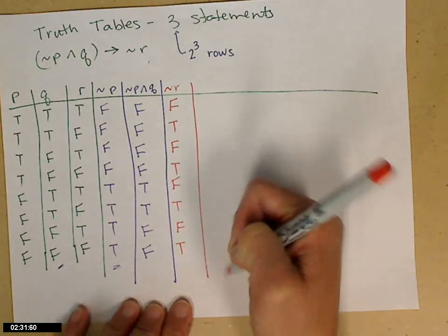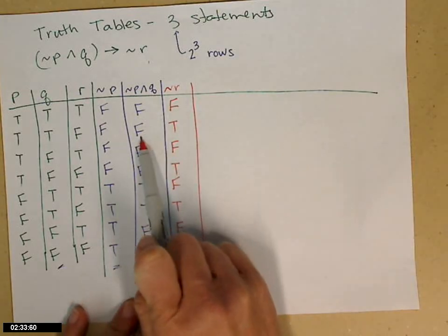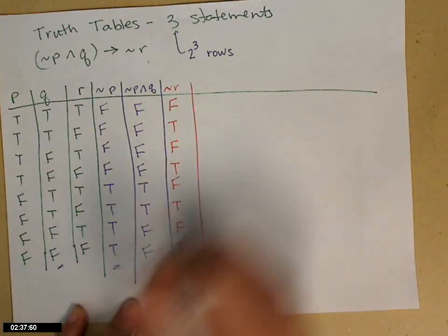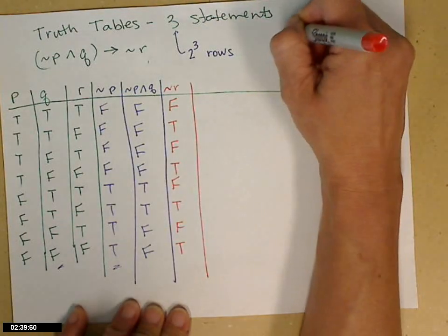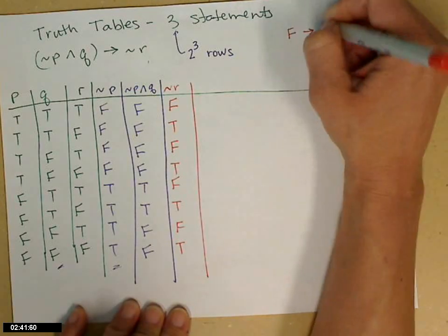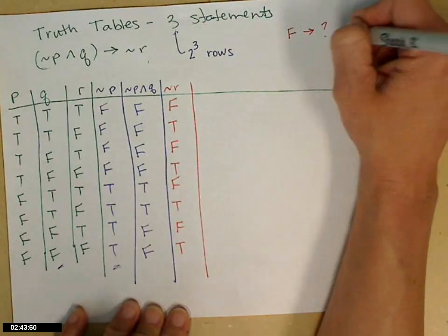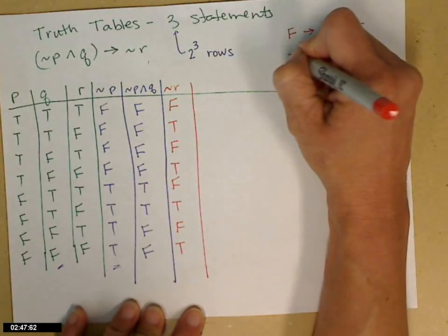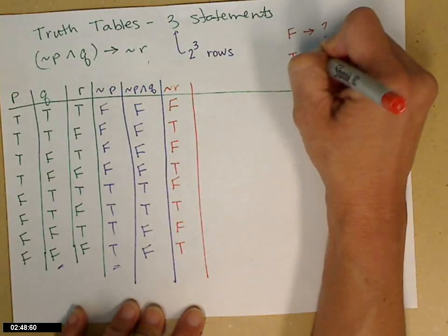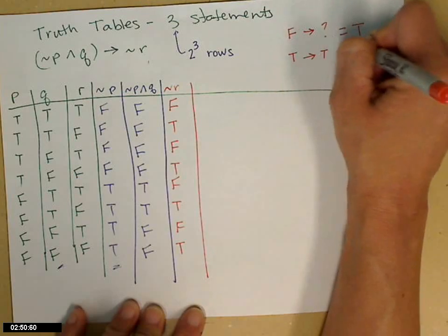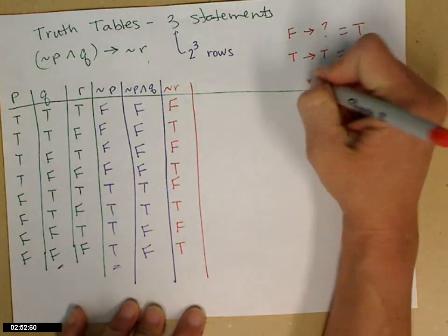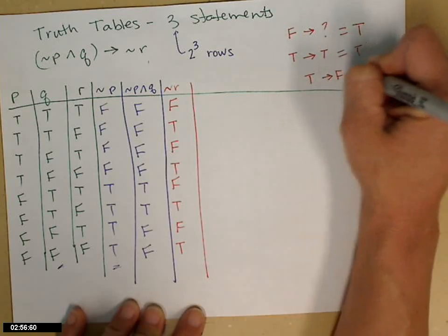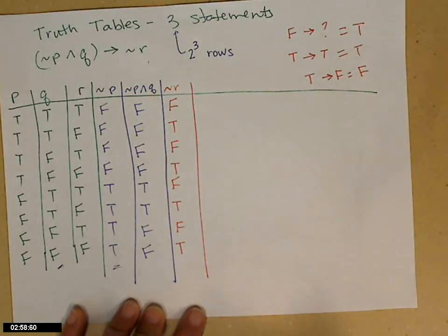Now I'm ready to do the if-then. So if the purple column, then the red column. Remember: if the first one is false, it doesn't matter what the second one is — the answer is true. If the first one is true and the second one is true, the answer is true. Our only false is if the first one is true and the second one is false.